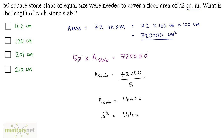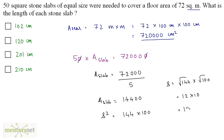This can be written as 144 × 100. We have been asked for the length of each stone slab. So s = √144 × √100 = 12 × 10 = 120 centimeters. So option B is the correct answer.